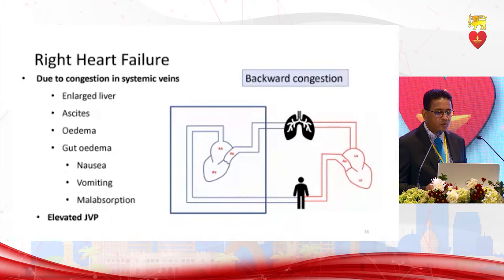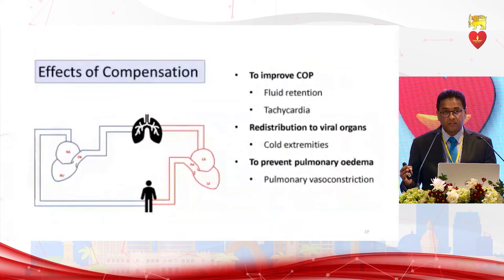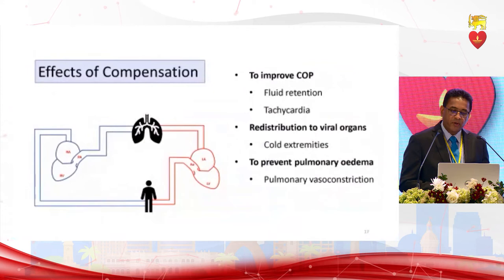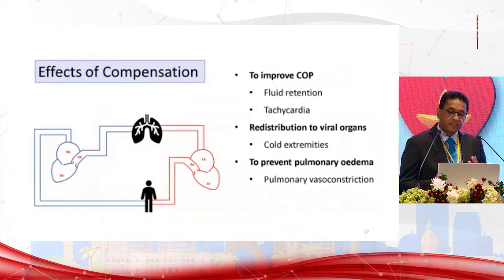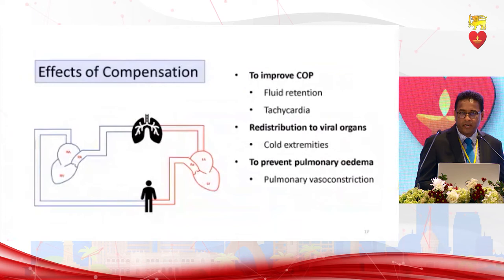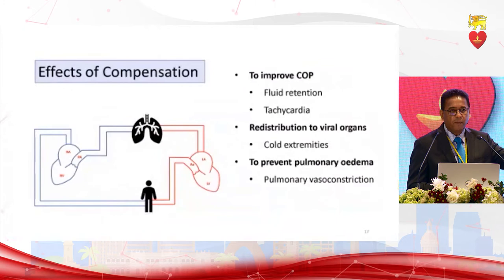The body tries to compensate these effects. It retains fluid through activation of the renin-angiotensin-aldosterone mechanism, activates the sympathetic nervous system causing tachycardia, redistributes blood to vital organs causing cold extremities, and constricts the pulmonary artery to prevent pulmonary edema — which can lead to pulmonary hypertension.